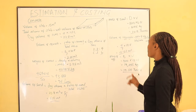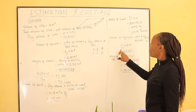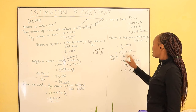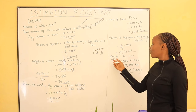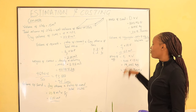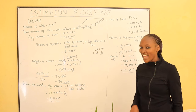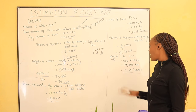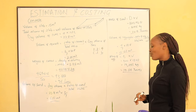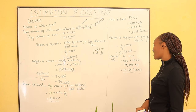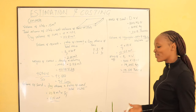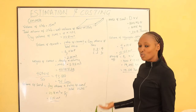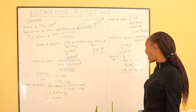Now let's go to the aggregate. The volume of aggregate is 4 over 7 of the total dry volume: 4 over 7 times 22.8 gives 13.03 cubic meters. The mass of aggregate: density of aggregate times volume — the density of aggregate is 1500 — so 1500 times 13.03 gives 19,545 kilograms, which is 19.54 tons. If one lorry is 10 tons, that comes to approximately two lorries of aggregates.